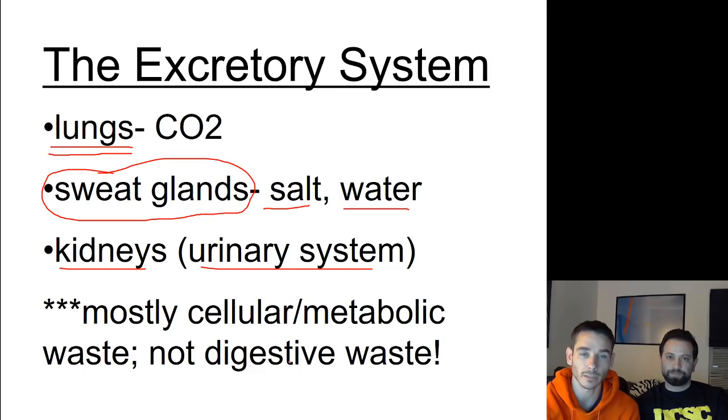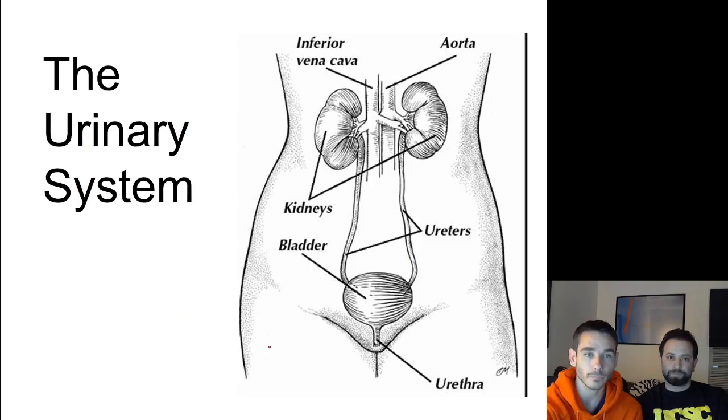We're going to focus on the kidneys and specifically the urinary system as our main excretory system component. Remember that the excretory system is about excreting waste from our cells — waste produced by cells in our body, not waste that comes from our digestive system. Those are two different things, and digestive waste is not part of the excretory system.